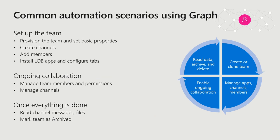There are a lot of really common scenarios when using the Graph with Teams. We have APIs dedicated towards a number of different functions: whether you're setting up a team by provisioning it, defining basic properties, creating channels, managing membership, and installing apps and configuring tabs. With ongoing collaboration, you can use our APIs to manage members, manage channels, and age them out if no longer needed. And when everything is done, you can read out the channel messages, query the files, and even mark the team as archived. With the Graph, we provide a set of APIs to complete that entire end-to-end lifecycle of the team and automate every step along the way.